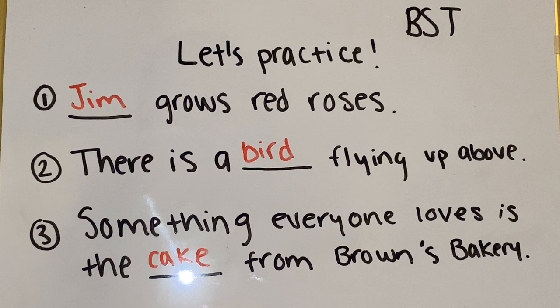In sentence three, I wrote something everyone loves is the cake from Brown's Bakery. In this one, we understand that the thing being discussed is the blank from Brown's Bakery because we describe it as something that everyone loves. And I chose a cake.